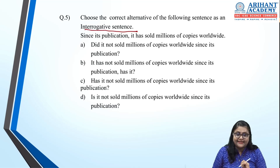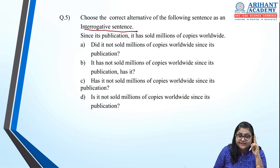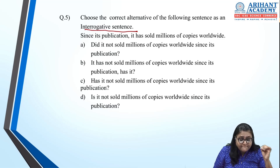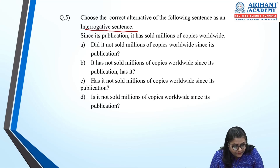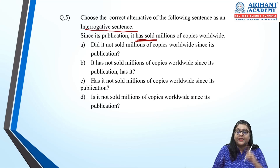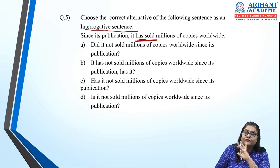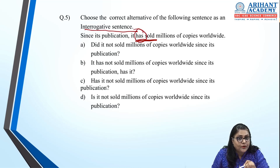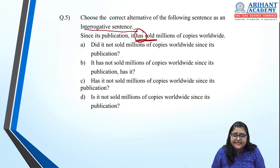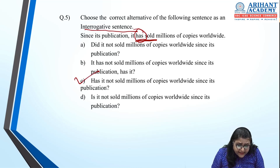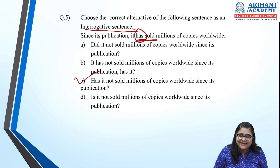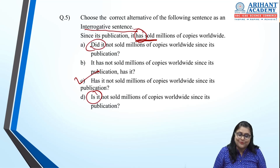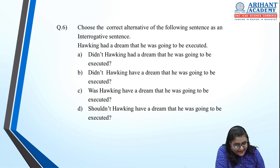Fifth: change to interrogative. The sentence is 'Since its publication it has sold millions of copies worldwide.' An interrogative sentence must have a question mark. Note the tense — 'has' is given, so the question should begin with 'has.' Option C: 'Has it not sold millions of copies worldwide since its publication?' is correct, as the other options don't begin with 'has.'